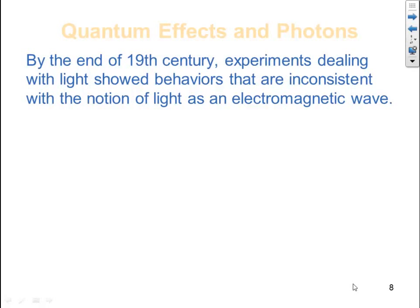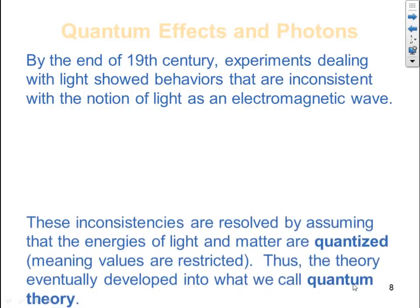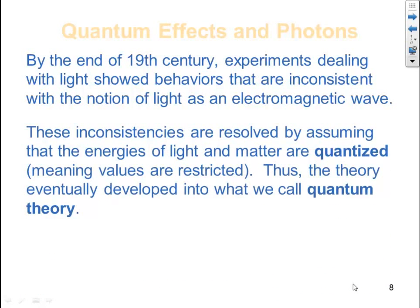By the end of the 19th century, experiments dealing with light showed behaviors that are inconsistent with the notion of light as an electromagnetic wave. These inconsistencies are resolved by assuming that the energies of light and matter are quantized, meaning values are restricted. Thus, the theory eventually developed into what we call quantum theory.